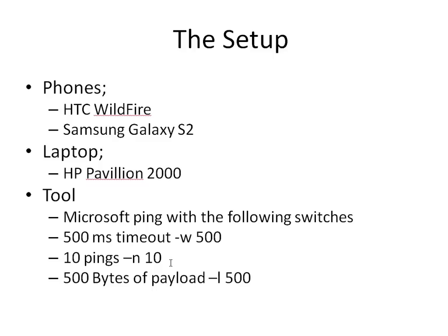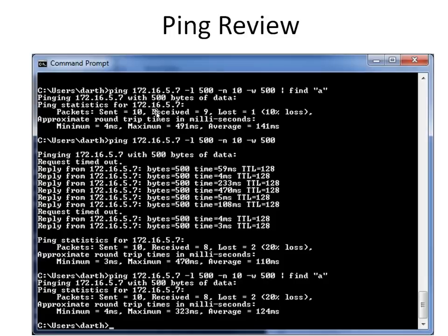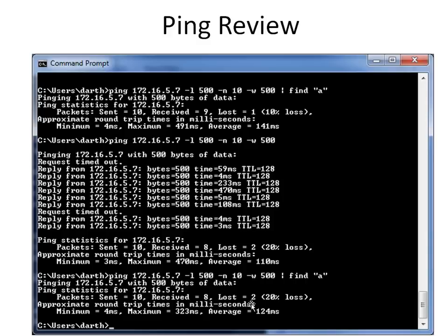I want to stick with Microsoft ping. On screen you can see all the ping output. I did something a little different — I piped the ping command through 'find' with the letter A. Instead of getting everything on screen, that trick filters to just the lines containing the letter A. For example, 'reply from IP with bytes and time' has no A, so it's filtered out. What remains is the statistics section: packets sent, approximate round trip, and minimum. It's a handy tip for getting just the summary without all the extra output.